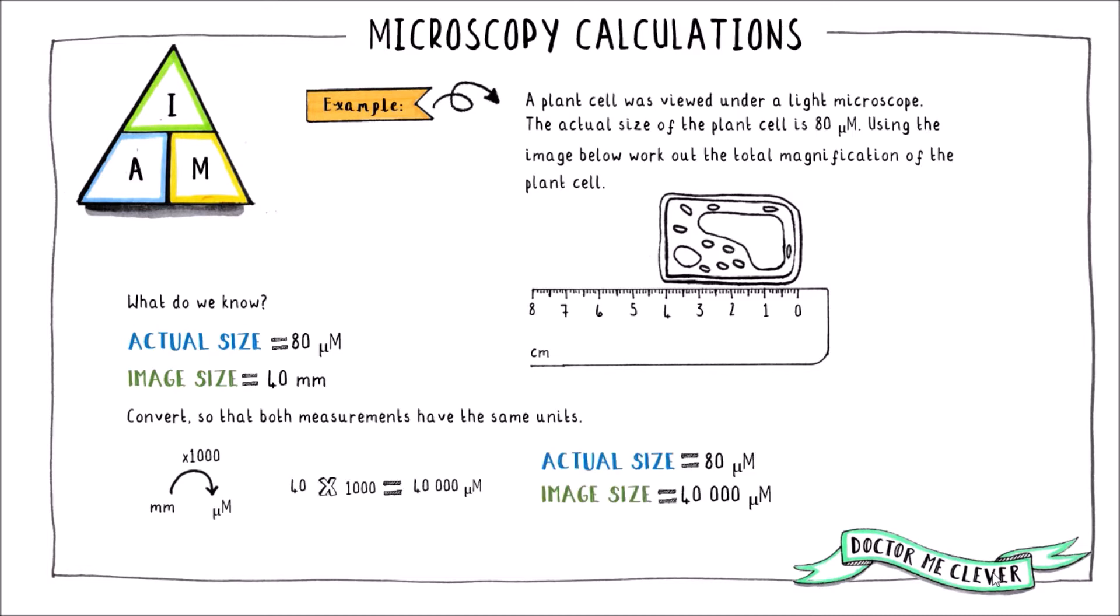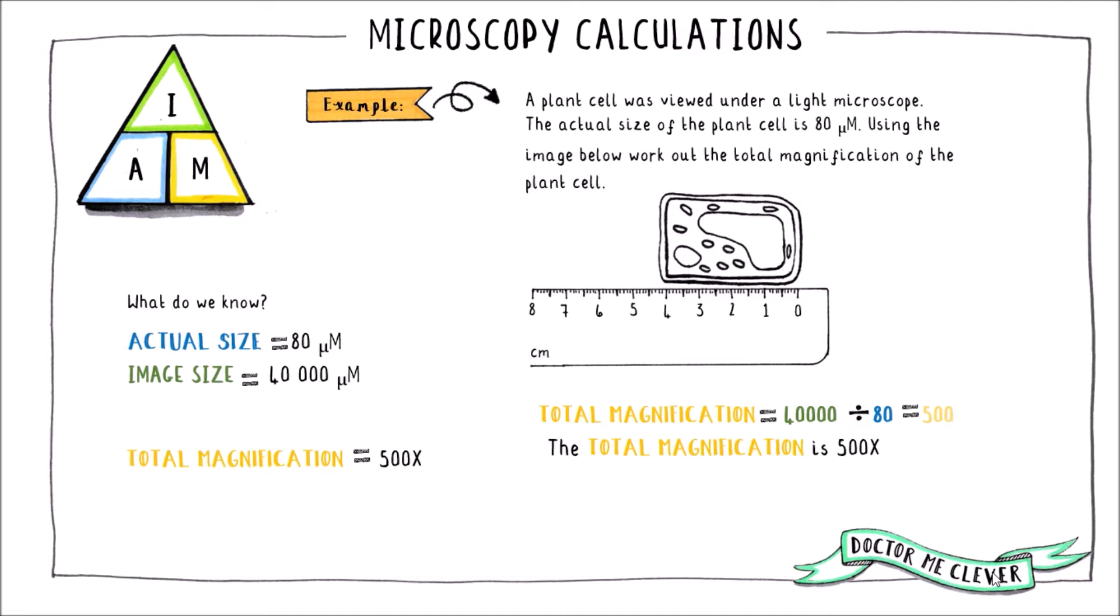Then we can take the IAM triangle and plug numbers in. So we take the image size of 40,000 micrometres and divide it by the actual size of the specimen 80 micrometres. This equals the total magnification which is 500 times.